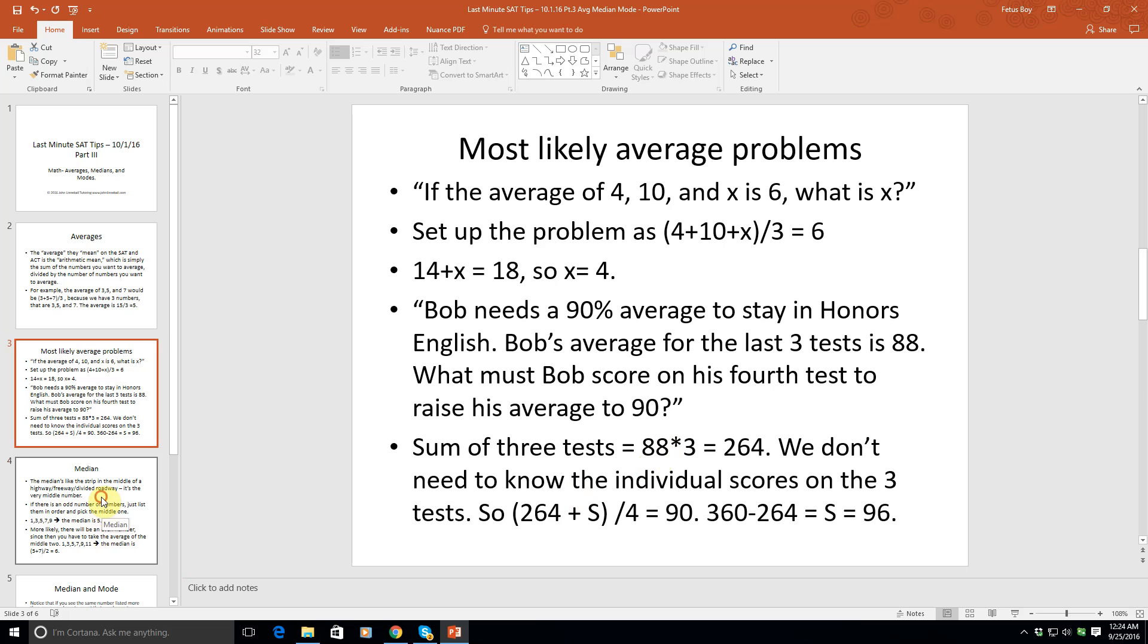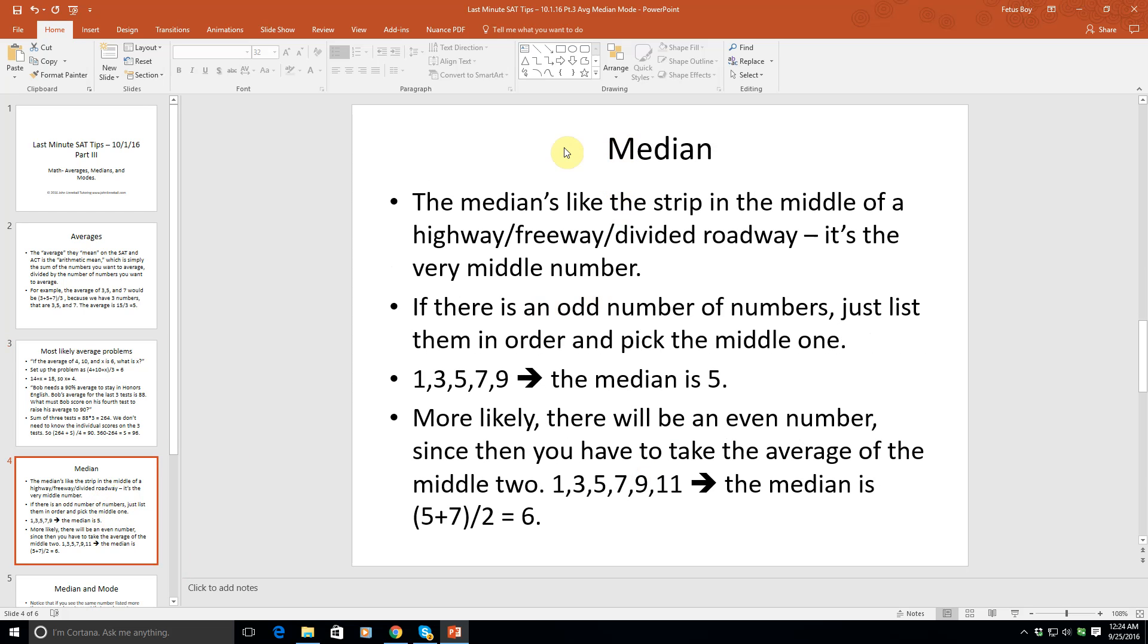On to the next concept, the median. The median is like the strip in the middle of a highway - it's the very middle number. If there's an odd number of numbers, just list them in order and pick the middle one. For example, with 1, 3, 5, 7, 9, the median is 5 because there are two values before it and two values after it.